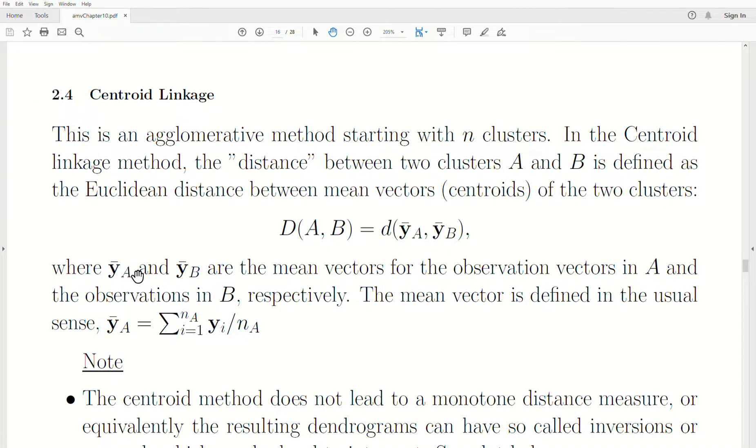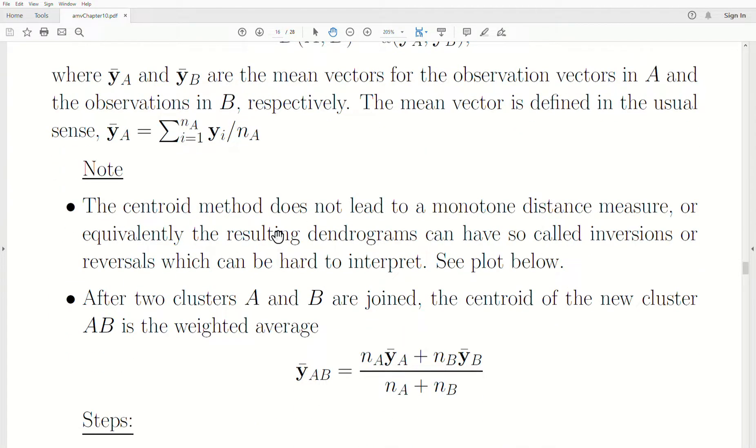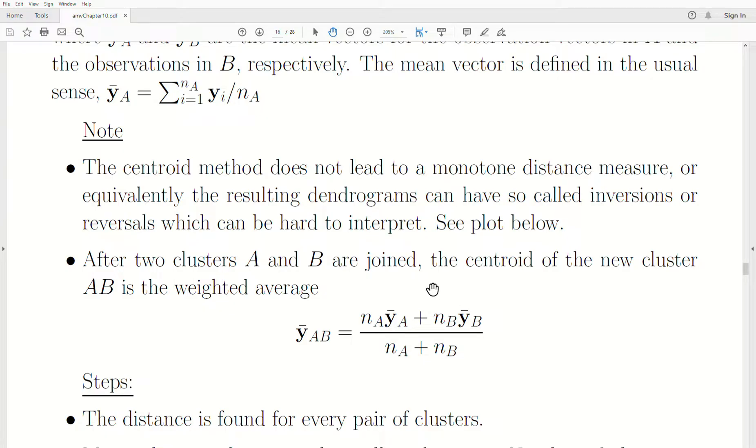Y sub A bar and Y sub B bar are the mean vectors for the observations in A and B respectively. Now the centroid, here's a big note: the centroid method does not lead to a monotone distance measure. Or equivalently, the resulting dendrograms can have so-called inversions or reversals in which it's hard to interpret. And I'll point these out in the plot below.